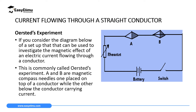The first one is the Oersted experiment. Two, we are going to use the Ampere swimming rule. Three, we are going to use Fleming's right hand grip rule for a current-carrying conductor. Then later we will discuss Maxwell's corkscrew rule.